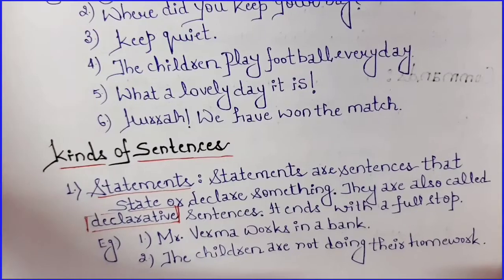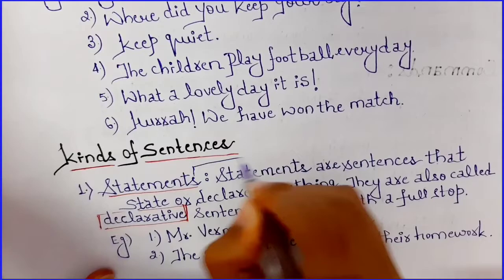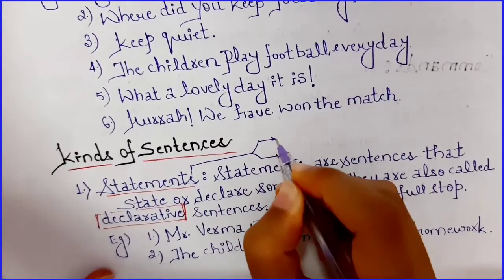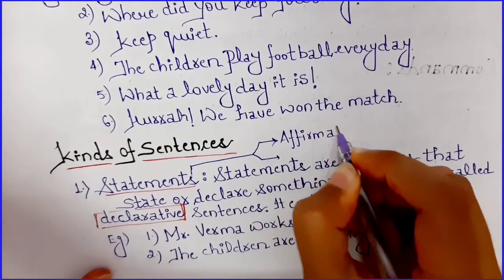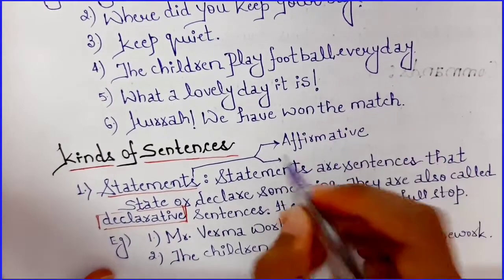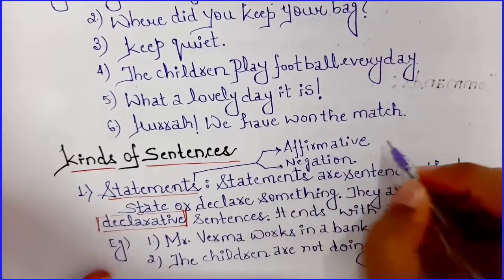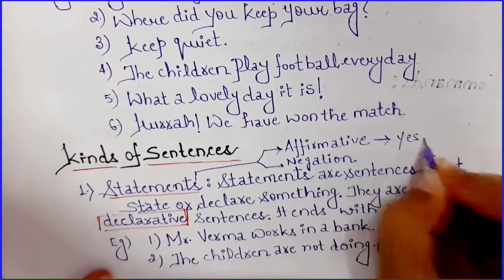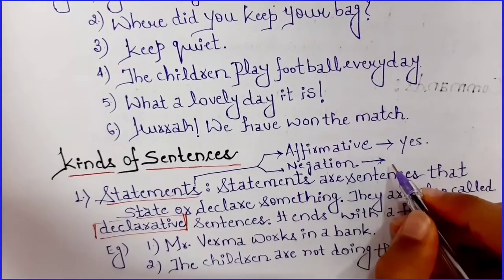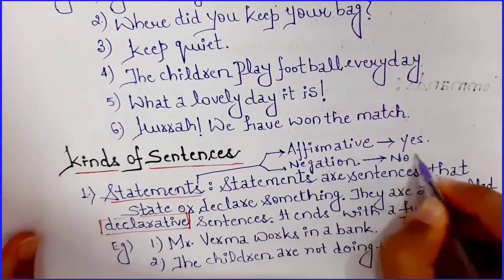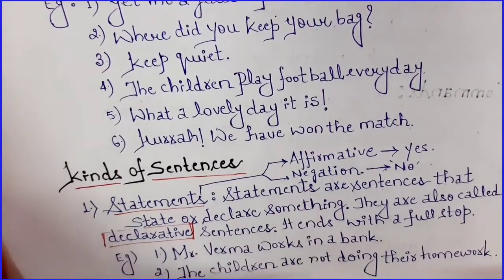We have two kinds of statements. One is affirmative and the other is negation. If I am replying with a yes, then it is an affirmative sentence. And if I am using a sentence which has 'no' or 'not' in it, then it is a negation sentence. These are the two kinds of statements we have.